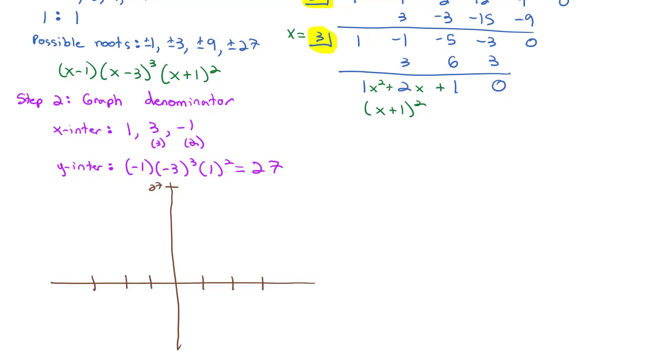So we'll just put 27 way up there, not to scale. And 1, 2, 3, and negative 1, negative 2, negative 3. So we got a y-intercept at 27, x-intercept at 1, at 3, which I'll put a little note that that's a cubic, and at negative 1, and I'll make a little note that that's squared.